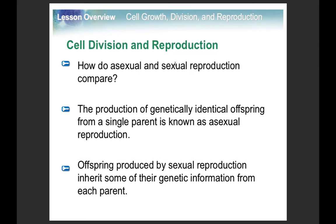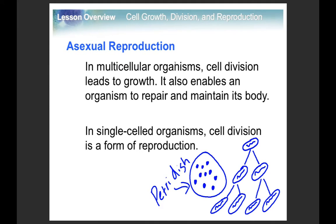We already went over asexual and sexual reproduction. In asexual reproduction, you basically make a clone of yourself. In sexual reproduction, you bring in extra traits because you get one from mom and one from dad. When we're talking about cell division in your body, especially with injuries or growth, that's going to be similar to asexual reproduction.